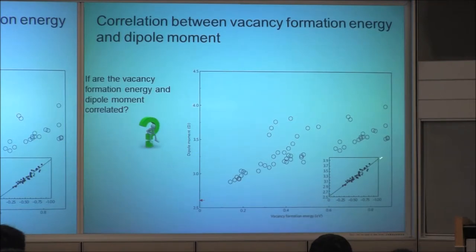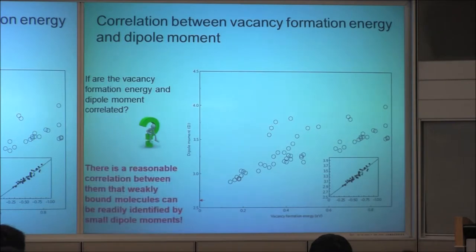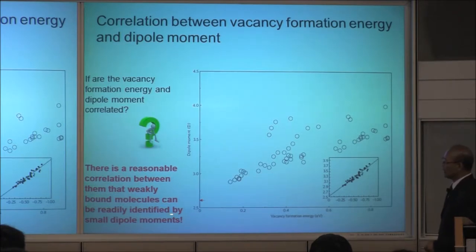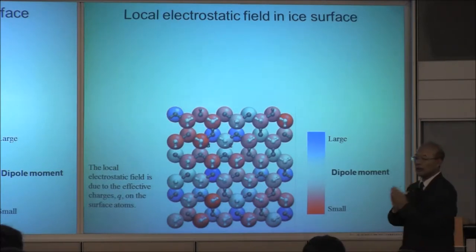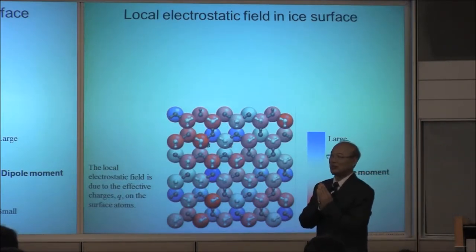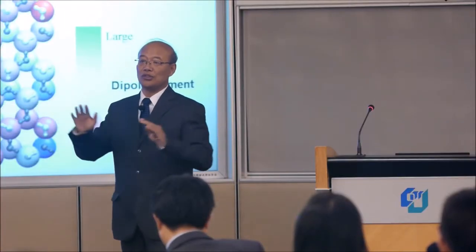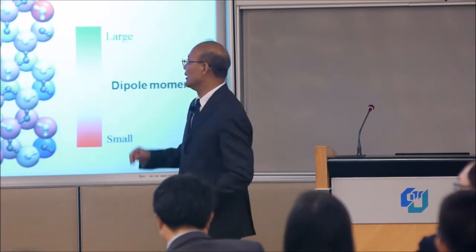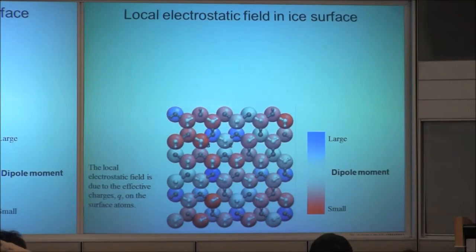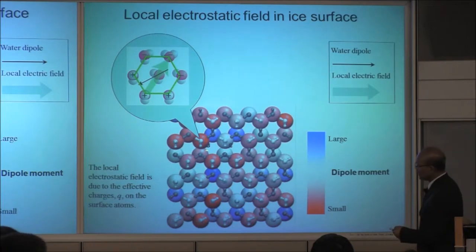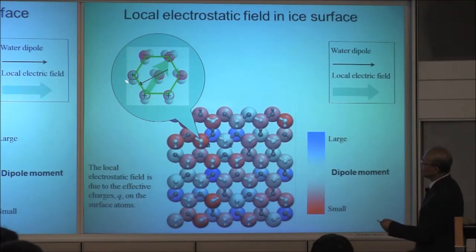So we use the dipole moment to study the physics dynamics. This phenomenon is very interesting — there is a correlation between them. The basic correlation is that the weakly bonded molecule is related to the small dipole moment. It's very small. So people will ask: you have the same surfaces, but how come there is such a big deviation? We can use different colors to represent the surface in this topological picture.